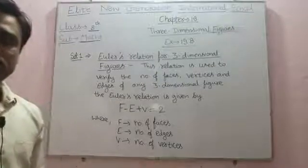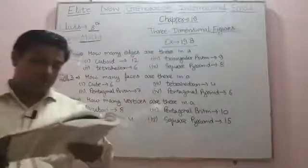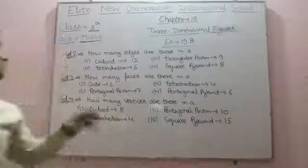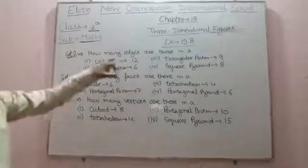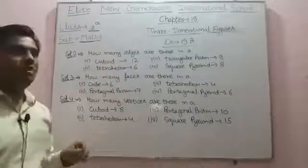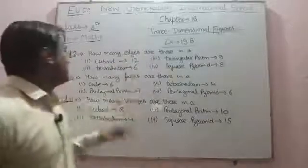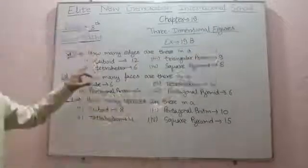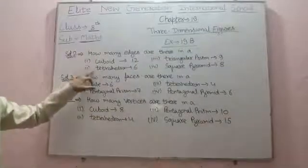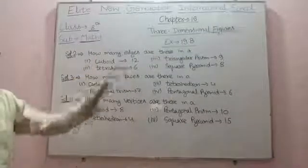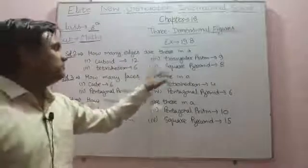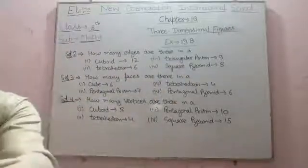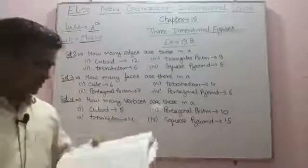In question number three, how many edges are there in a cuboid? In a cuboid, the total number of edges are 12. In a triangular prism, the total number of edges are 9. In a tetrahedron, the total number of edges are 6, and in a square pyramid, the total number of edges are 8.